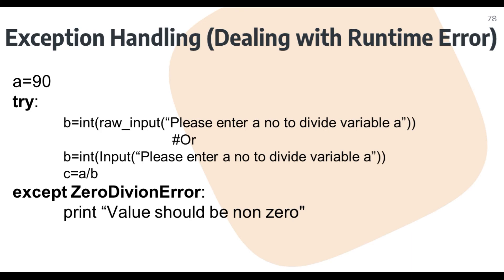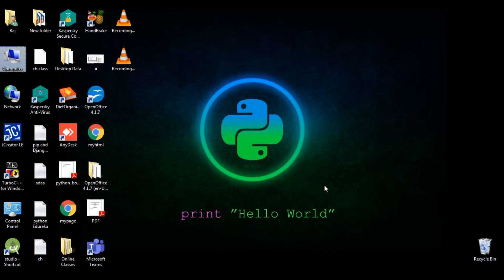We can consider the same example we discussed in runtime error. Variable a equals 90. Inside the try block, we ask the user to enter a value — using raw_input for Python 2.7 or input for Python 3.0+. The sensitive code is c equals a divided by b. If the user provides a non-zero value, it will give the output easily. Otherwise, the except block catches the ZeroDivisionError and the value of b should be non-zero.